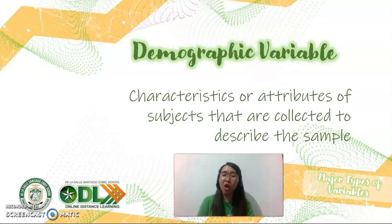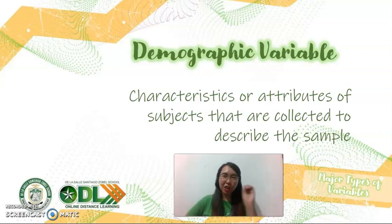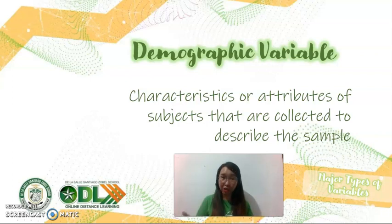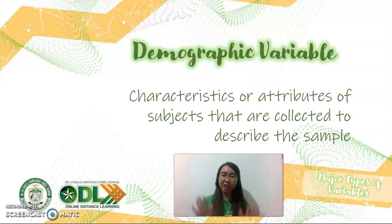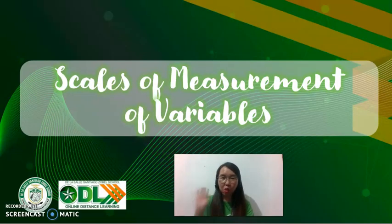Last but not least, we have the demographic variable — characteristics or attributes of subjects collected to describe the sample. How is it different from an attribute IV? Both involve characteristics of participants, but an attribute IV causes change in results. If you simply ask respondents whether they are male or female or what their religion is, but you do not consider these factors as affecting the results of the study, then it is just a demographic variable — collected only to describe the sample. On our next episode, we will discuss the four major scales of measurement of variables. Stay tuned.